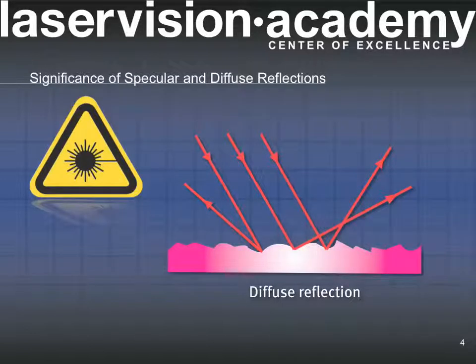Diffused light reflections occur when light strikes rough surfaces like roadways, cinder block, matte-finished instruments, or walls with surface irregularities that are randomly oriented. At a microscopic level, light reflections from these rough surfaces still satisfy the law of reflection. However, the numerous irregularities scatter light in all directions.